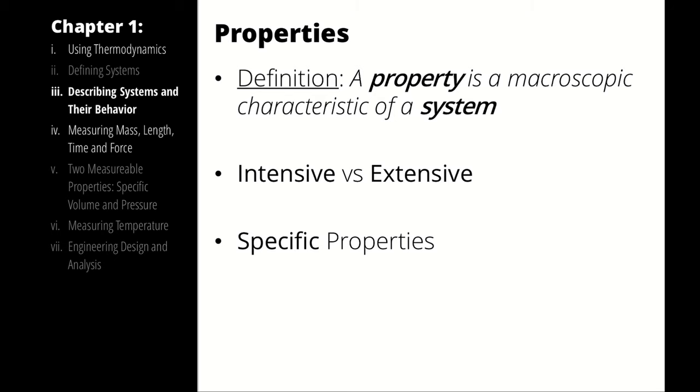Next definition. When we describe properties, we are describing a macroscopic characteristic of the system. So it's a description of something about the system as a whole. And we sort properties into different categories so that we can keep track of which ones are useful under different circumstances.